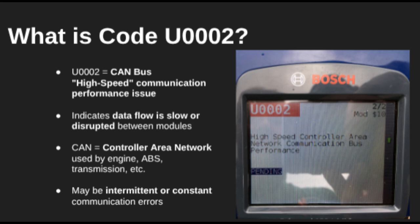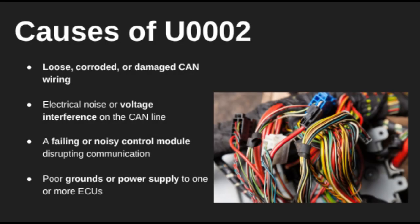The CAN bus is what lets your vehicle's computer modules — like your engine control unit, transmission, ABS, and more — communicate instantly. When you get a U0002 code, it means the system has detected that communication is lagging, distorted, or inconsistent.